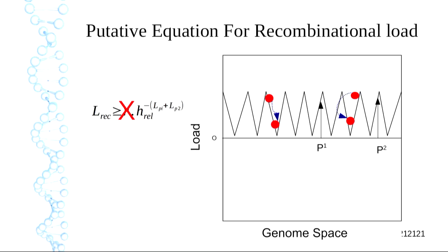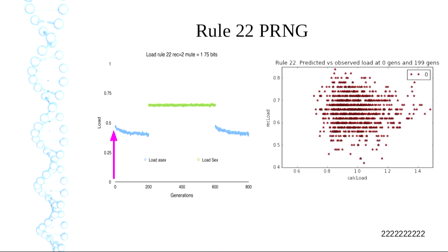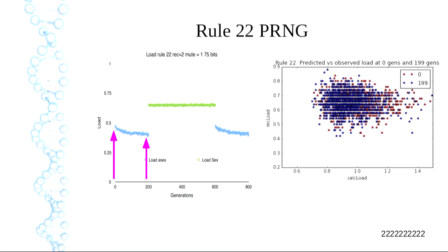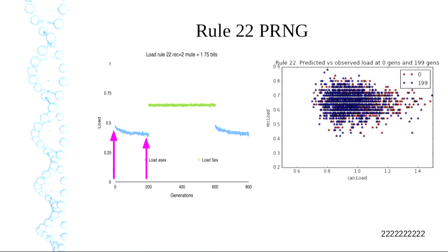Rule 22 appears to be a class 3 machine. Under mutational load it improves a little bit, but you can apply recombination as long as you like and nothing happens. With our calculated load, the figures are in the right ballpark but not quite right, and there's no real pattern. Comparing theoretical load to what we actually measure, they don't match up very well for rule 22. The population moves deeper into a well, but it's not really making any difference to the calculated or recombinational load.